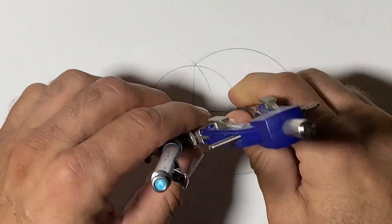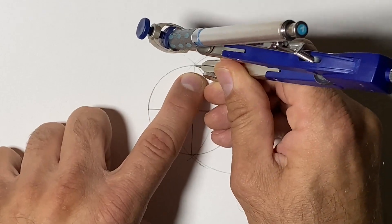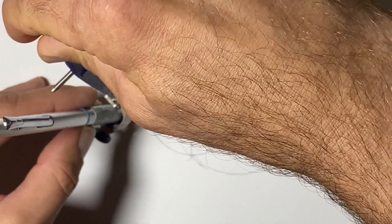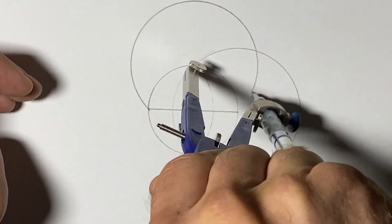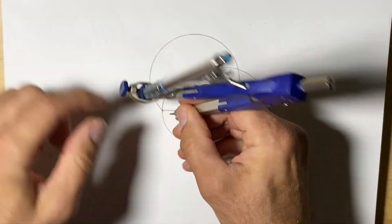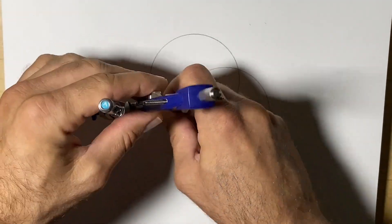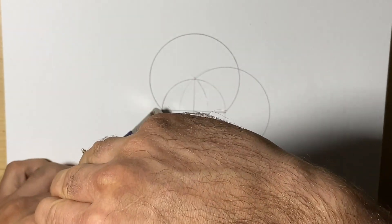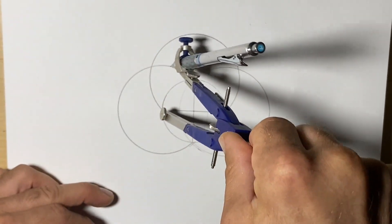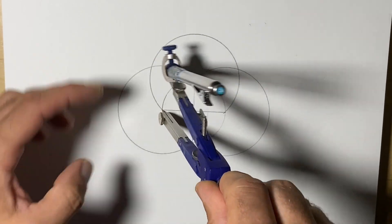Then we'll go to that spot up here and do the same. Then we'll go to this spot here and repeat that. So there are four new arcs or parts of a circle.